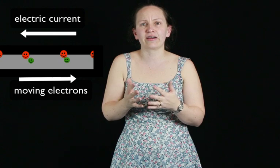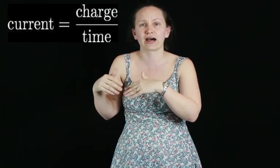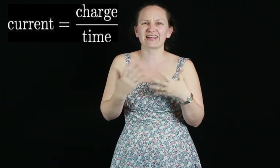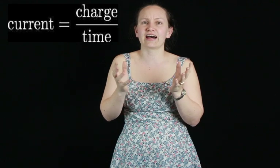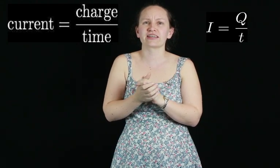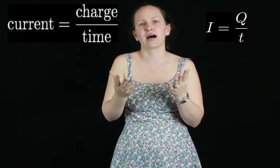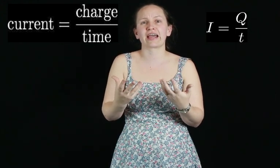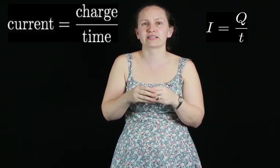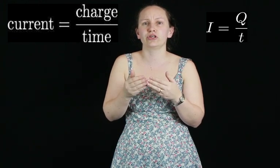To calculate current, we use the formula: current is equal to charge over time. We have some funny letters that we use to write this equation. Current is given the letter I. Charge is given the letter Q. And time is T. So the formula that we use to calculate the amount of current is written I equals Q over T.